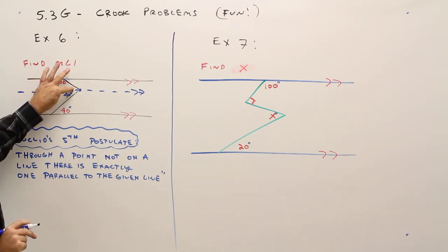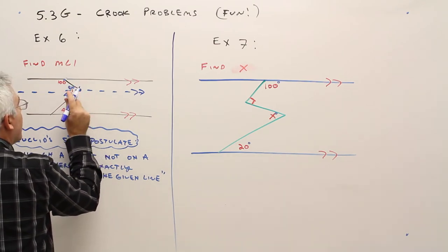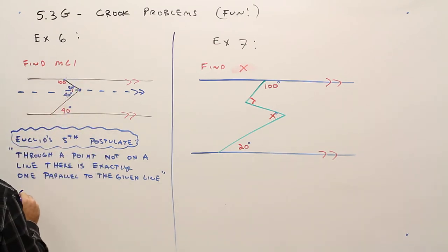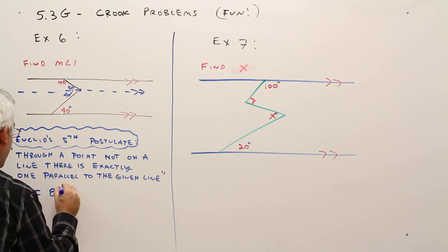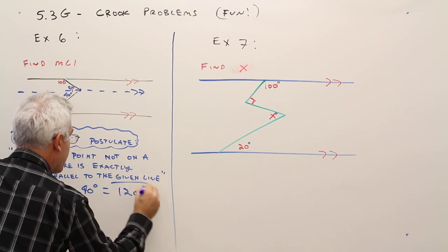If you're 100 over here, you won't be 100, you'll be supplementary to 100, you'll be 80. So then angle one is 80. I'll just put it down here. Angle one equals 80 degrees plus 40 degrees equals 120 degrees.